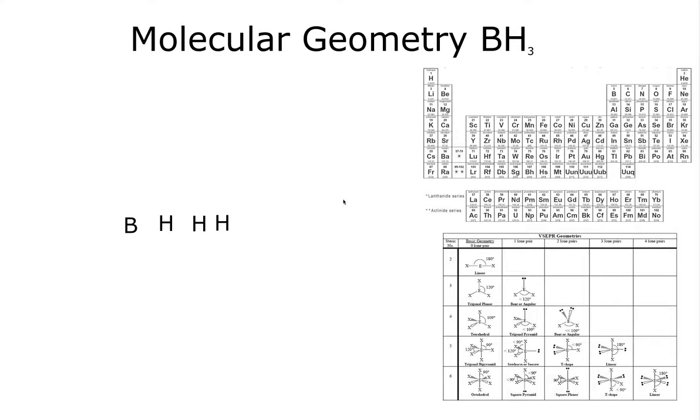Okay, for this video we'll be constructing the molecular geometry for BH₃. Before we do that, we should always figure out its Lewis structure, so we do that by figuring out how many valence electrons each atom will contribute to the molecule.